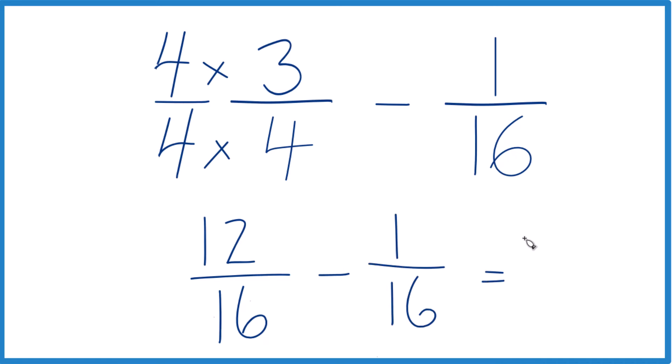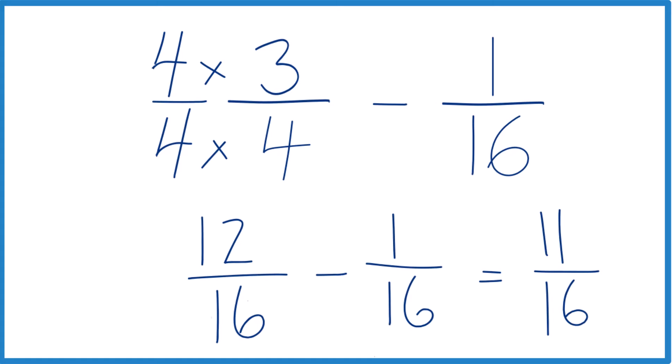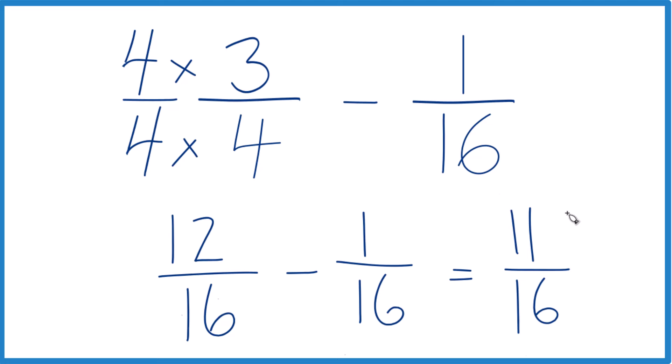Because twelve minus one is eleven, and we keep the sixteen the same across. And three-fourths minus one-sixteenth equals eleven-sixteenths.